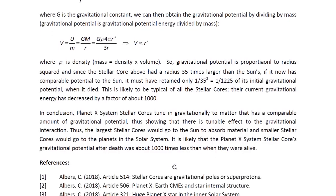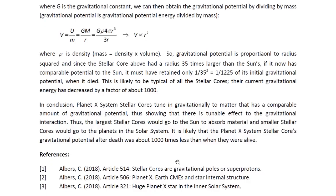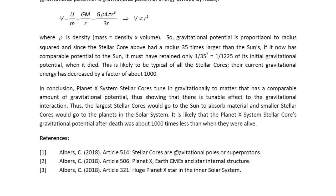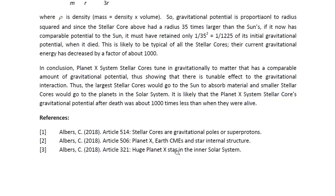In conclusion, Planet X system stellar cores tune in gravitationally to matter that has a comparable amount of gravitational potential, thus showing that there is a tunable effect to the gravitational interaction. The larger stellar cores would go to the Sun to absorb material, and smaller stellar cores would go to the planets in the solar system. It is likely that the Planet X system stellar cores' gravitational potential after death was about 1,000 times less than when they were alive. These are the references. This is Dr. Claudia Albers, Planet X physicist. Thank you for watching.